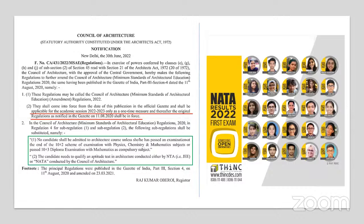You just only need to pass the 10+2 examination with Physics, Chemistry, and Mathematics as subjects. Also, if you are a 10+3 diploma student, you just need to study Mathematics as a compulsory subject and pass the examination. The 50% criteria has been removed from the eligibility condition.